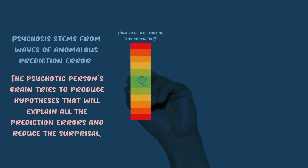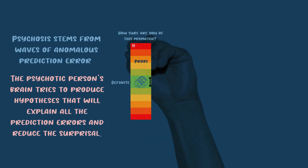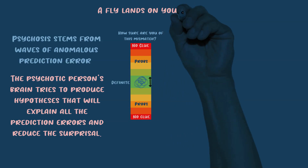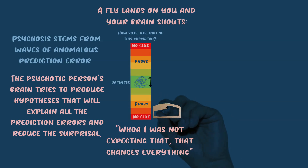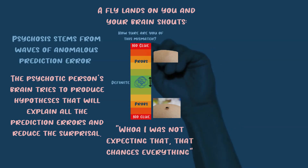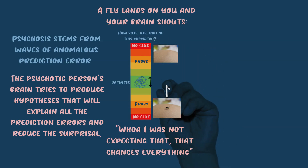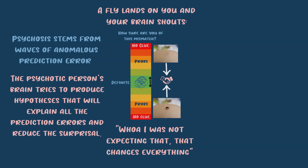This can lead to a psychotic person developing incredibly weird hypotheses, or even ignoring bottom-up input entirely — which would manifest as hallucinations. To visualize this: imagine someone with aberrant dopamine release is incorrectly surprised by mundane data. A fly lands on a person, and because of the dopamine release, the brain shouts 'whoa, I was not expecting that — that changes everything.' The first time this occurs, the brain might be able to ignore it, thinking it was significant but moving on.